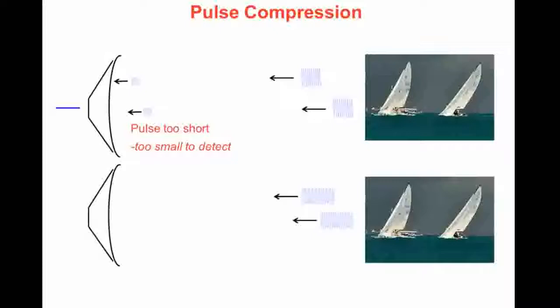So, one solution is to improve or increase the energy of the pulses by having them on longer. So, here we have longer pulses, but note that they're overlapped. So, when they get back to the radar antenna, they're seen as just one pulse or one target.